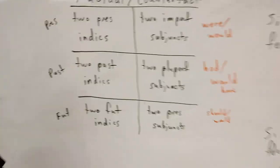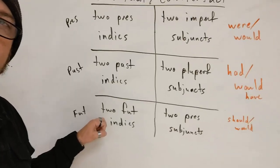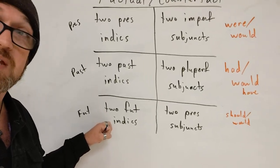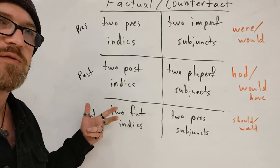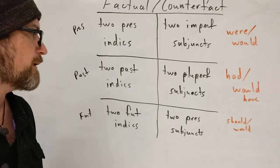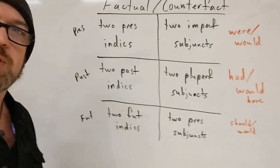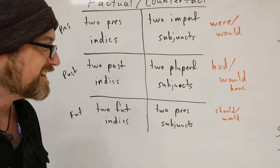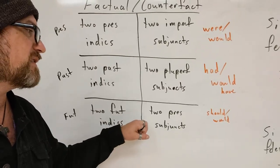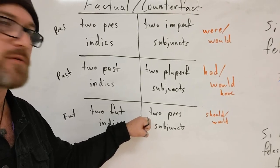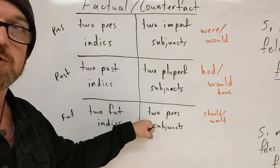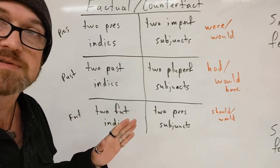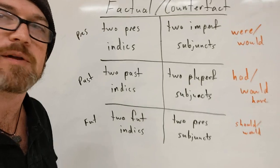For the future, you're going to have two future indicatives — and that does include the future perfect; in fact this is one of the spots where you're most likely to see a future perfect. You can't have future subjunctives because they don't exist. So if you see the future unreal or counterfactual, it's going to be two present subjunctives. I know that seems a little weird — let me show you some more examples.